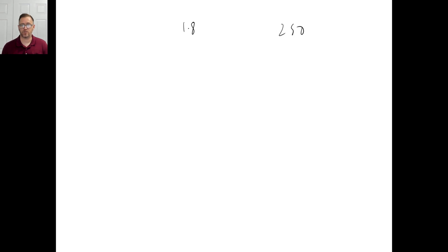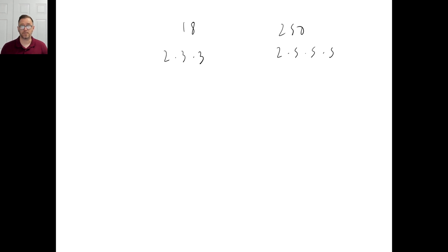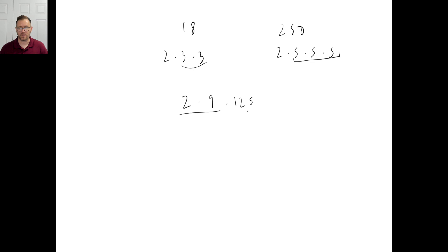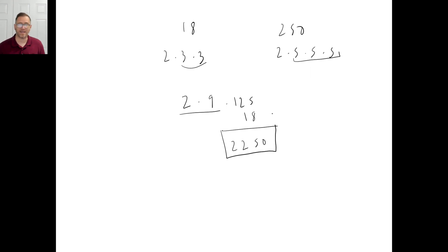Let's look at C: find the LCM of 18 and 250. For 18, you should have found 2 times 3 times 3. For 250, you should have found 2 times 5 times 5 times 5. Which has the most 2s? They both have one 2 — use it. Which has the most 3s? 18 does — 3 times 3 is 9. Which has the most 5s? 250 does — 5 times 5 times 5 is 125. So 125 times 18 gives you 2,250. That's the smallest number that both 18 and 250 divide evenly into.